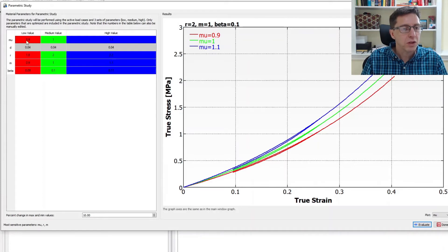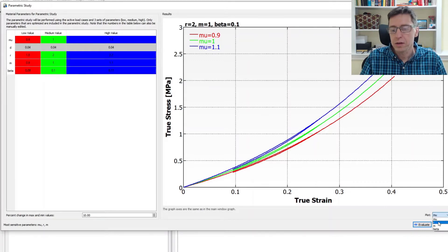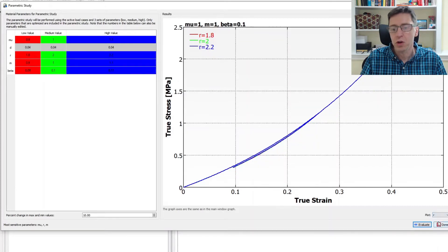So by default, the medium value is the same as there was in the main window. And then it picks a lower value that's 10% lower and a value that's 10% higher. So the parameter mu is simply the modulus or the stiffness of the material. And we can see that the green curve is what we had in the main window. If we increase mu by 10%, we get the blue one. If you reduce it, we get the red one. So that's no surprise. It's just stiffness.